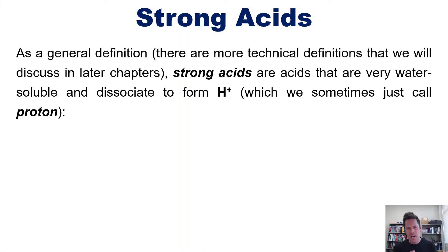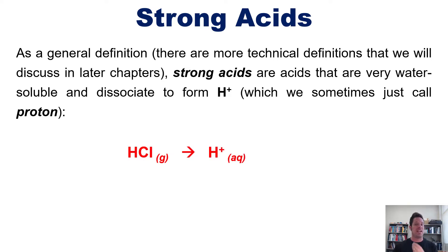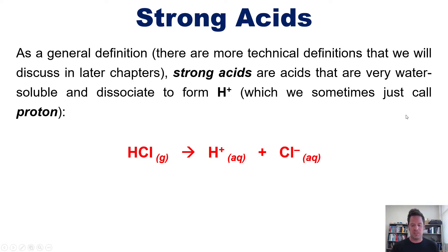As a general definition — and there are more technical definitions we will cover in later chapters — strong acids are acids that are very water-soluble and dissociate to form H⁺, which we sometimes call a proton. For example, HCl is a very strong acid. When you throw it in water it dissociates to give off H⁺ and Cl⁻, so it's an acid by our simple definition.